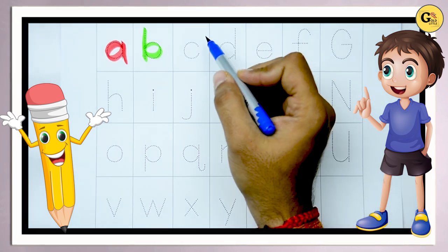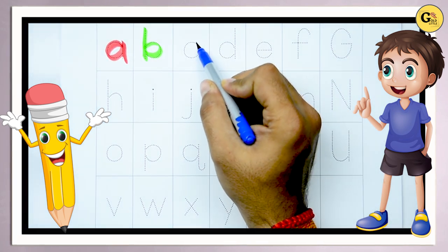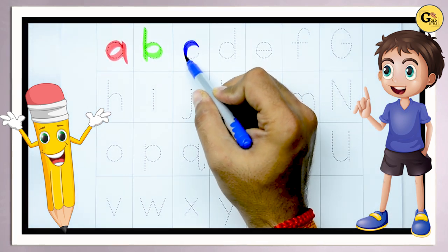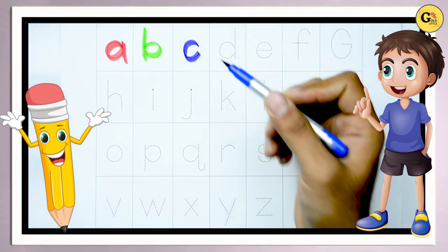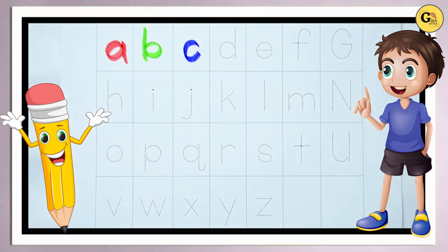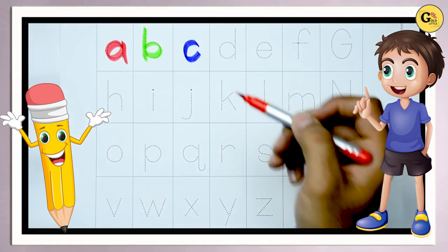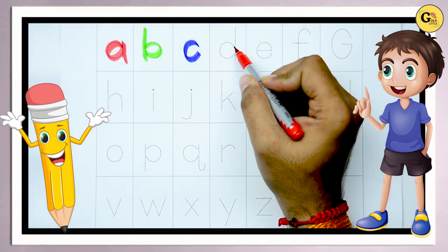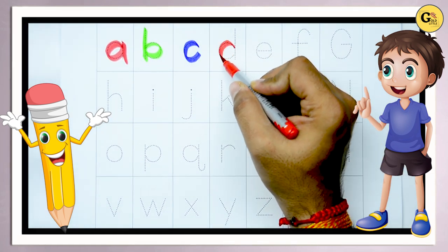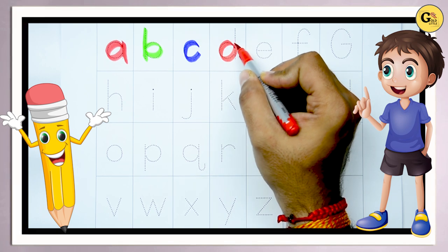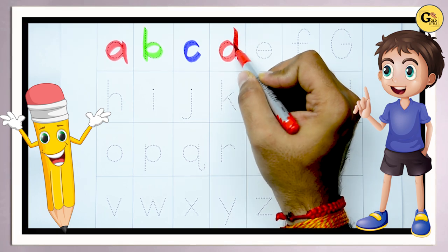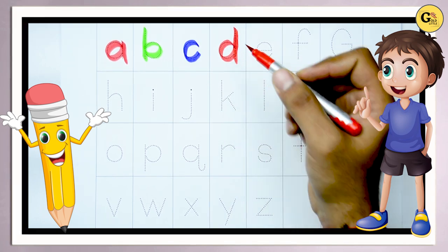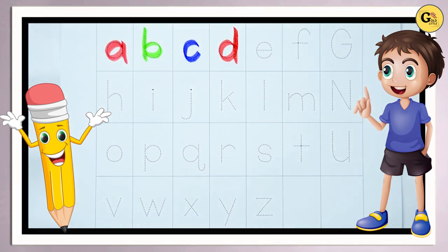Now we write C. Yes, it's C. Blue color, C. Red color, D. Yes, it's red color, D.